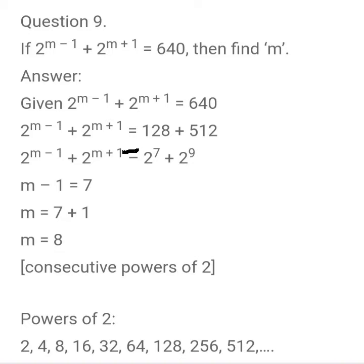Hence, 2 power m minus 1 equals 2 power 7, which implies the bases are equal, meaning the power values are also equal. Therefore, m minus 1 equals 7, which implies m equals 7 plus 1, that is m equals 8.